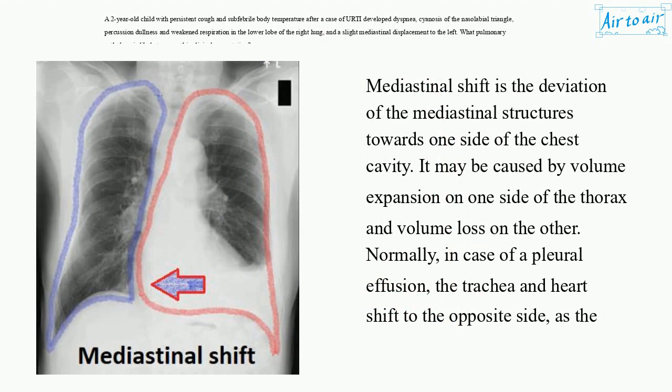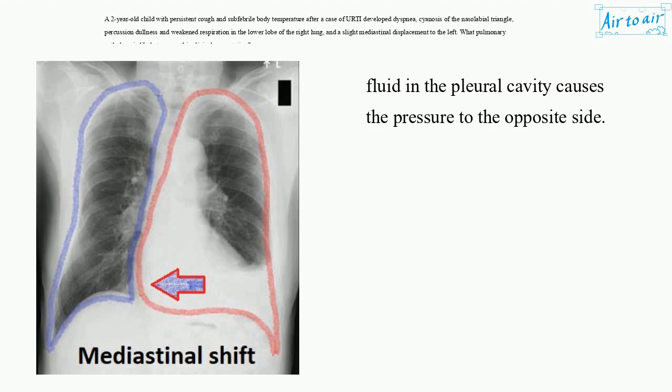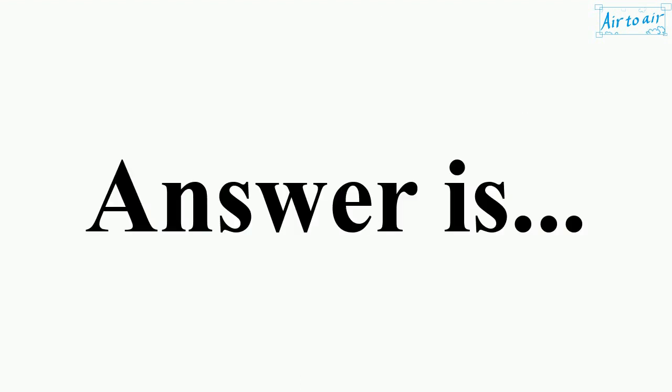Mediastinal shift is the deviation of the mediastinal structures towards one side of the chest cavity. It may be caused by volume expansion on one side of the thorax and volume loss on the other. Normally, in case of a pleural effusion, the trachea and heart shift to the opposite side, as the fluid in the pleural cavity causes pressure to the opposite side. The answer is...